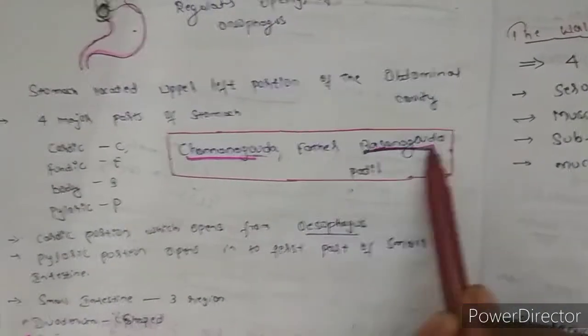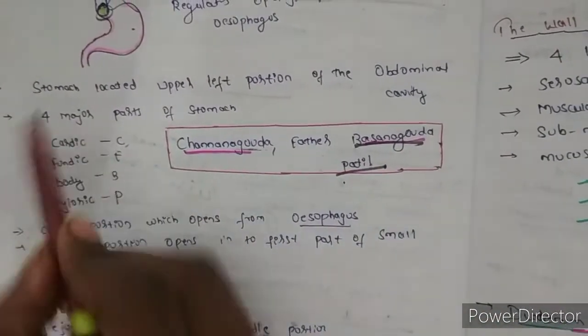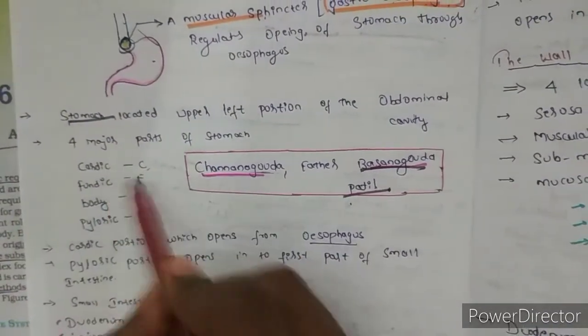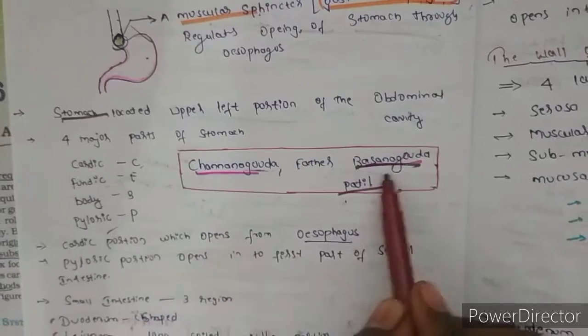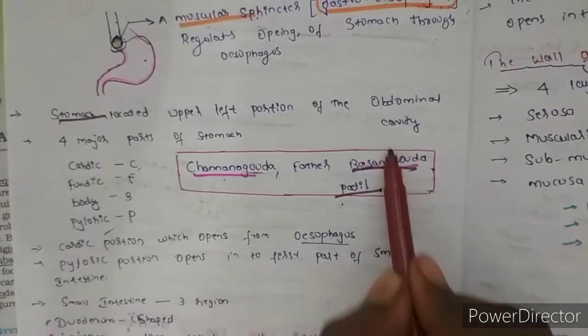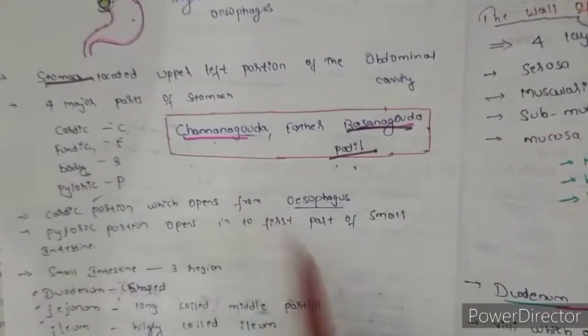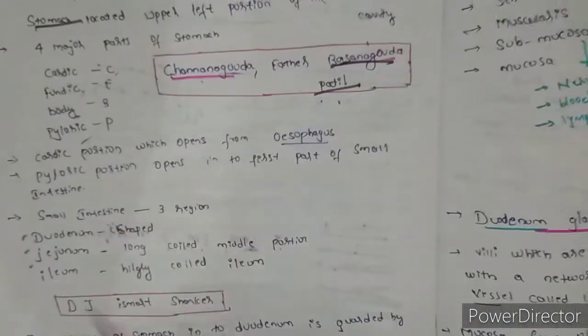So my name is Chenan Goda and my father name is Basan Goda Patil. When food will come to stomach, we have four different parts in stomach: cardiac, fundic, body, pyloric. You can remember 'Chenan Goda Father Basan Goda Patil.' C means cardiac, F means fundic, B means body, P means pyloric. So these notes will be available.